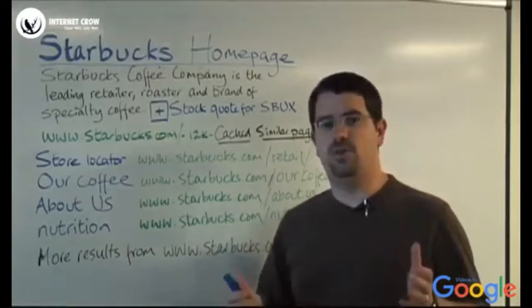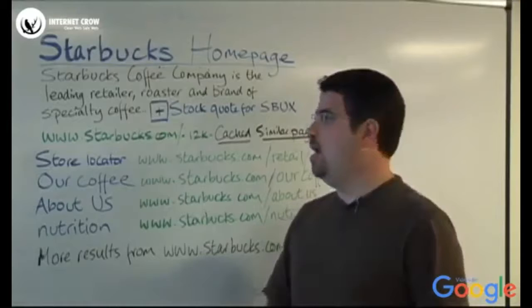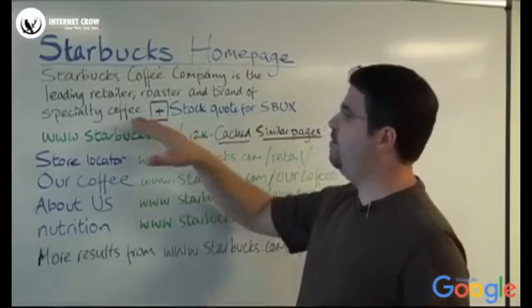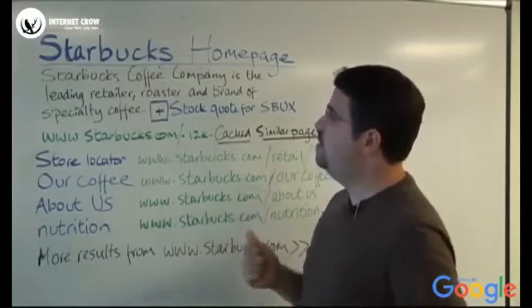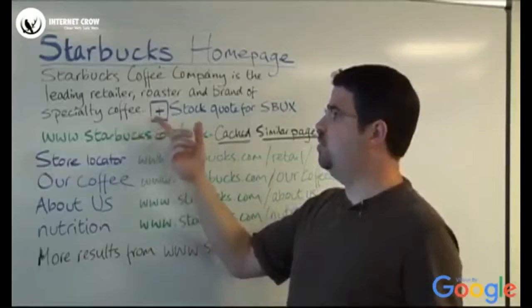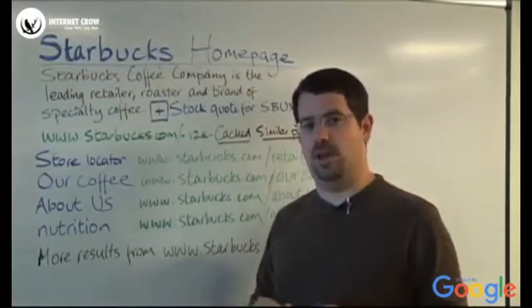Suppose, for example, we weren't able to crawl the URL. Maybe it was forbidden by robots.txt. Maybe, for whatever reason, it was down and we couldn't get a copy of it. So, we don't have anything from the page, not even the meta description tag, nothing at all. In those cases, we sometimes do rely on the open directory project.